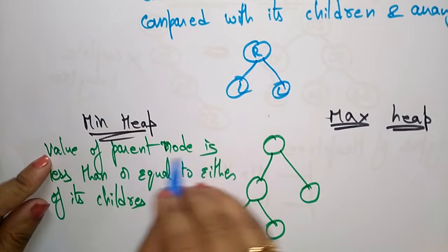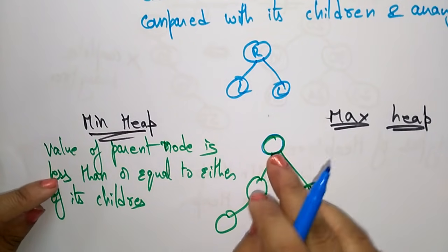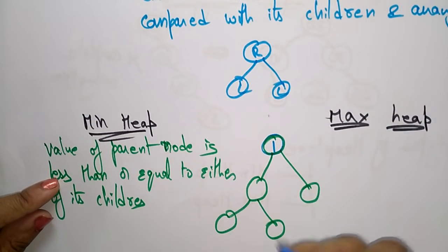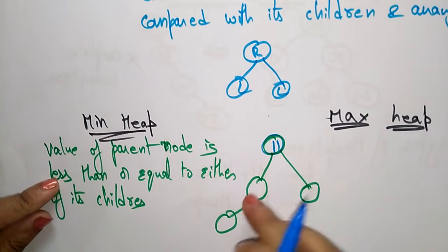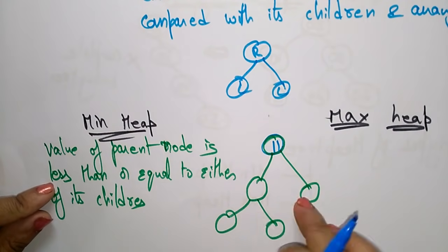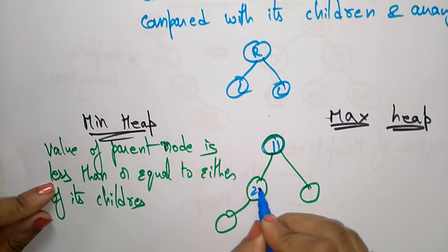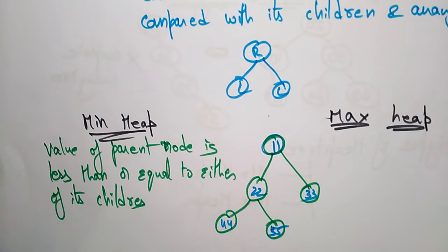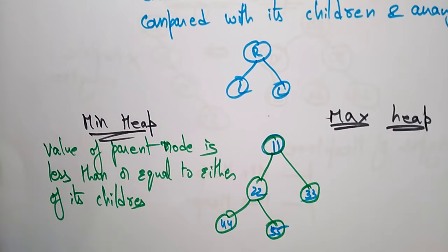The value of the parent node — which is the root node — should be less. For example, take 11 as the root. When compared to either of its children, the root node should be less, meaning all children are greater than the parent node. That is called a min heap.